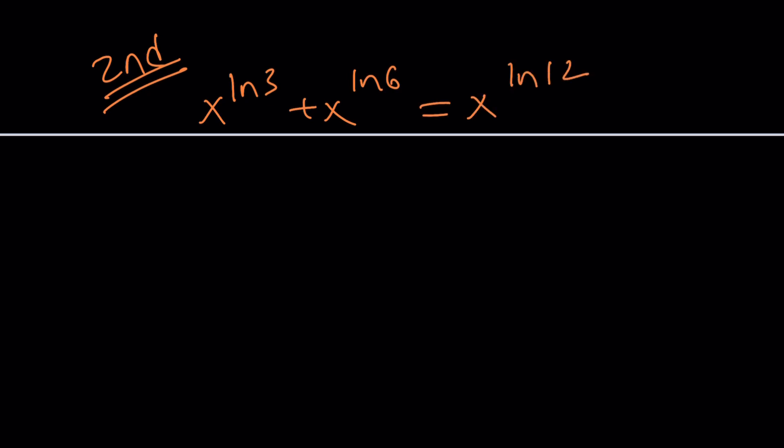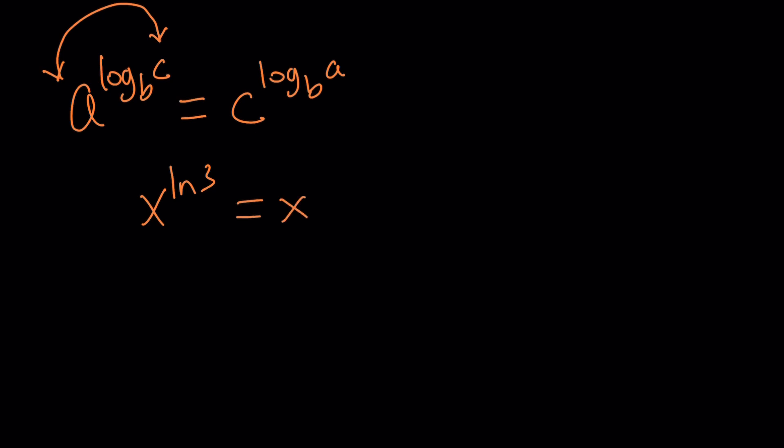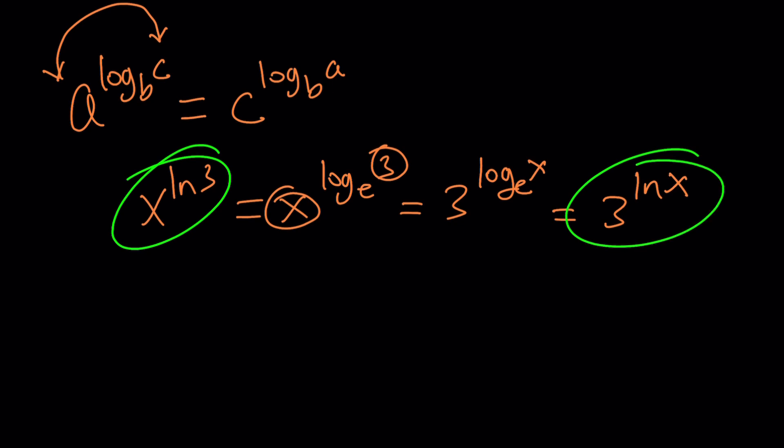Here's a really nice property that we're going to be using. Whenever you have something like a to the power log c with base b, these numbers can be switched. a and c. So this is the same thing as c to the power log a with base b. Why is that possible? Because we're not changing the base, first of all, and if you really want to know why this works, set each side equal to x and y, and then log both sides with base b, and you're going to see that you get two equal things. Make sense? I hope it does. But how do you apply it to an ln situation? x to the power ln3 means x to the power log 3 with base e. So now 3 and x will be switched, and that will be 3 to the power log x with base e, but that's just 3 to the power lnx.